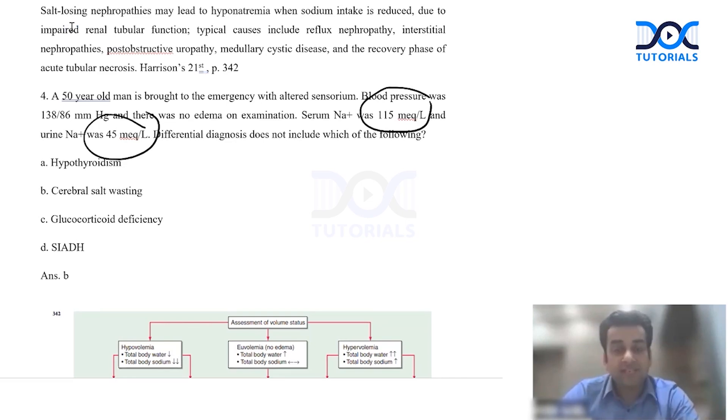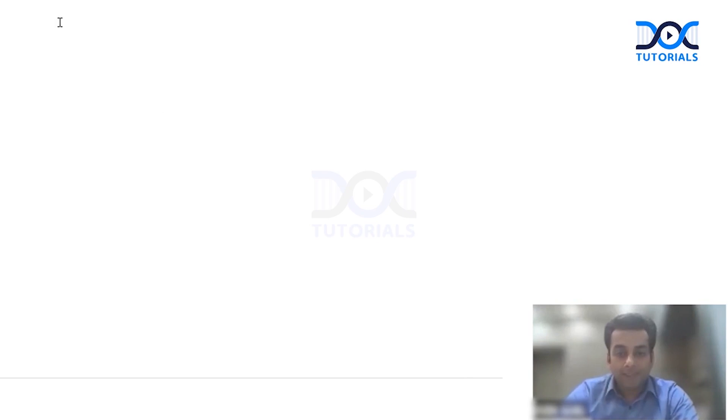Which is not a probable answer? Hypothyroidism can cause SIADH, can be one of these. Cerebral salt wasting - in cerebral salt wasting you expect hypovolemia, you expect hypotension. The next is glucocorticoid deficiency, again can cause euvolemic hyponatremia. And last but not the least SIADH, this is the prototype of euvolemic hyponatremia. So the answer is cerebral salt wasting. This is very important.